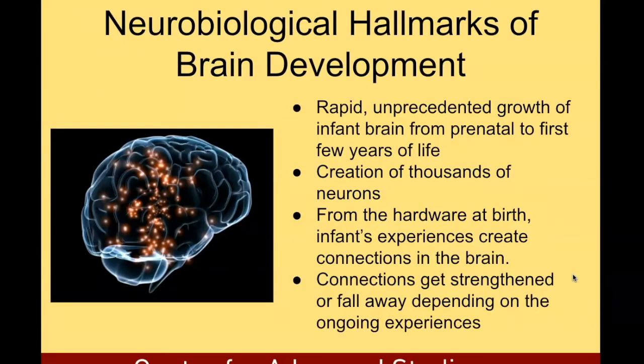Continuing the talk about neurons and the brain, here are some of the neurobiological hallmarks of brain development. There is rapid, unprecedented growth of the infant brain from prenatal to the first few years of life, with the creation of thousands of neurons in the brain. From the hardware present at birth, infants' experiences create multiple connections in the brain, and these connections get strengthened or fall away depending on ongoing experiences.